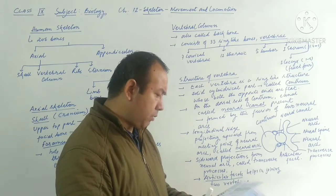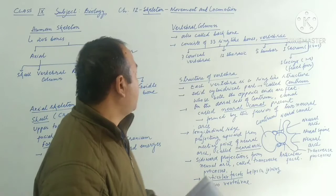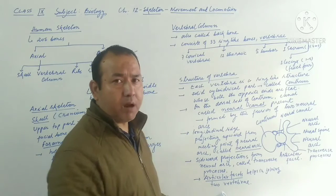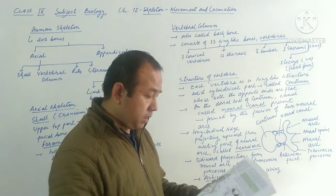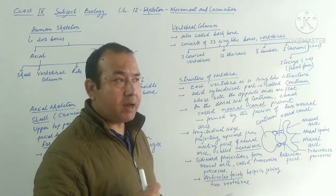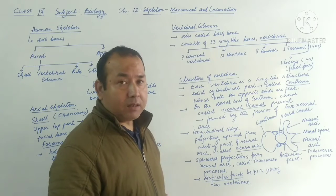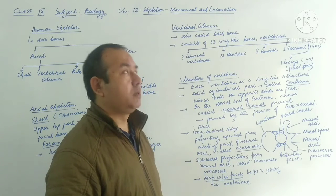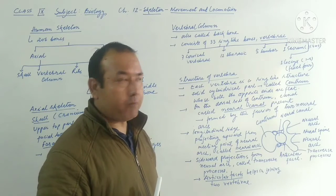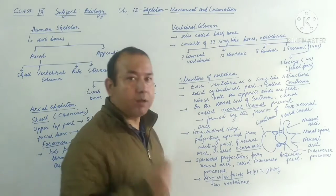An important point about the cervical vertebrae: the first cervical vertebra is called the atlas, and the last cervical vertebra is called the axis. Whenever we nod to say yes, we use the atlas; and whenever we shake our head to say no, we use the axis — the lowest part of the cervical vertebrae. This is a helpful way to remember their names.